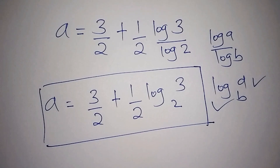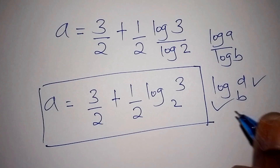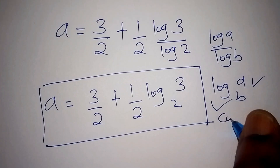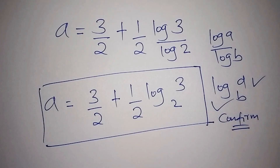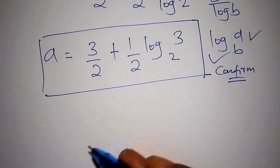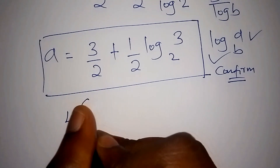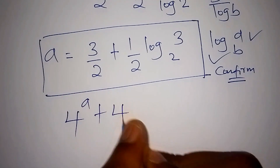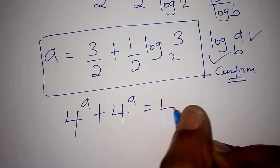These are our correct final answers. If you loved how we solved this math problem, please don't forget to subscribe to our channel. Let us now confirm this answer very quickly to verify it is indeed true. We had our problem: 4 to the power of a, plus 4 to the power of a, is equals to 48.